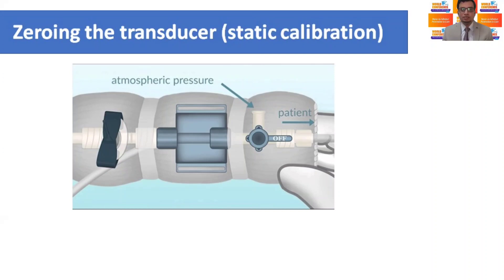For zeroing, the transducer is open to air and the recorded pressure, that is atmospheric pressure, is used by convention as 0 mm of mercury reference value.